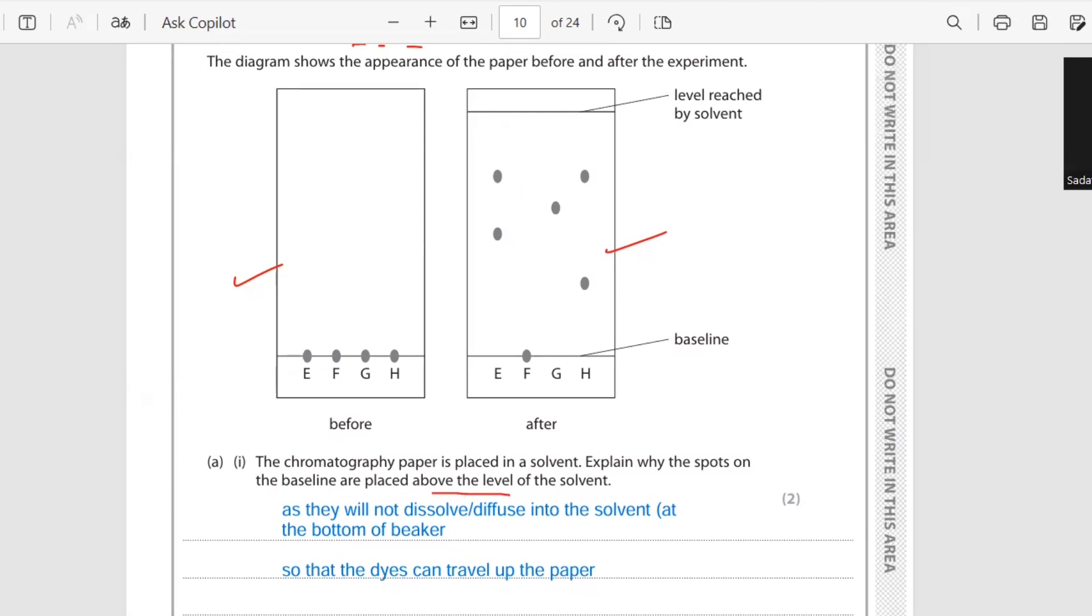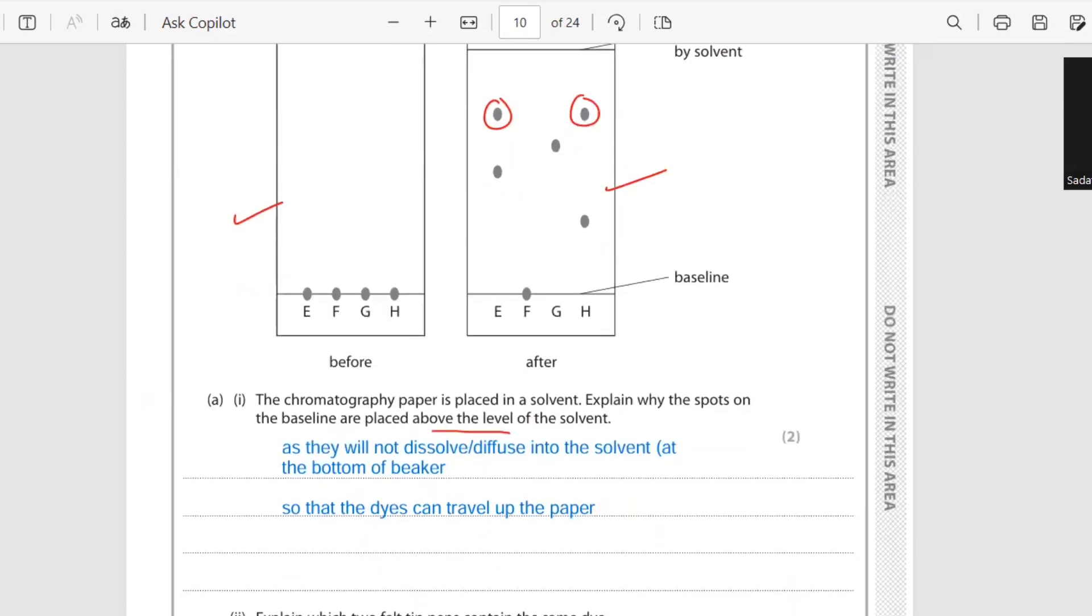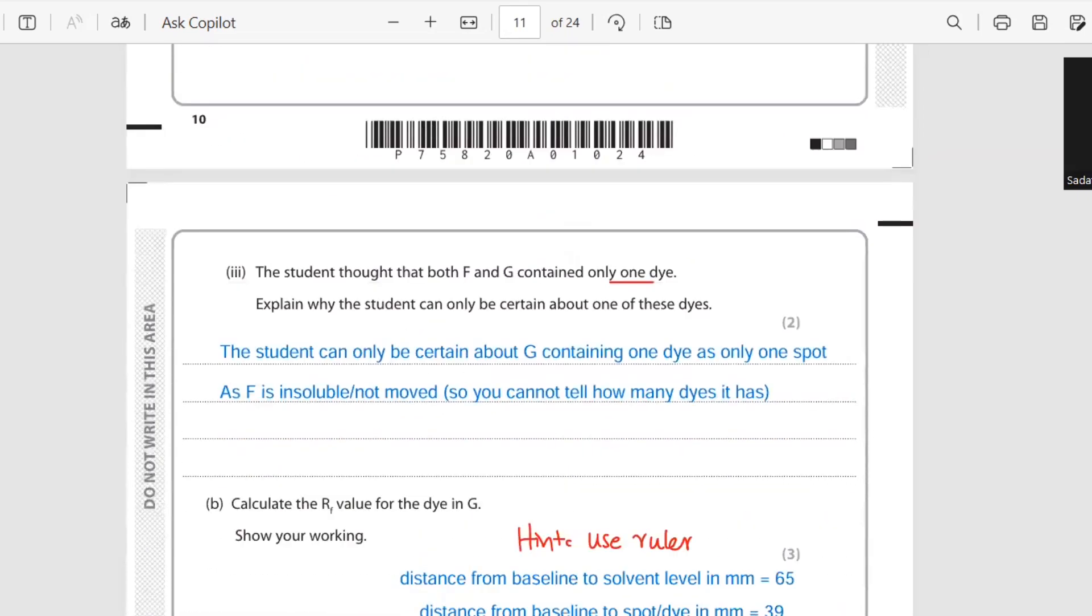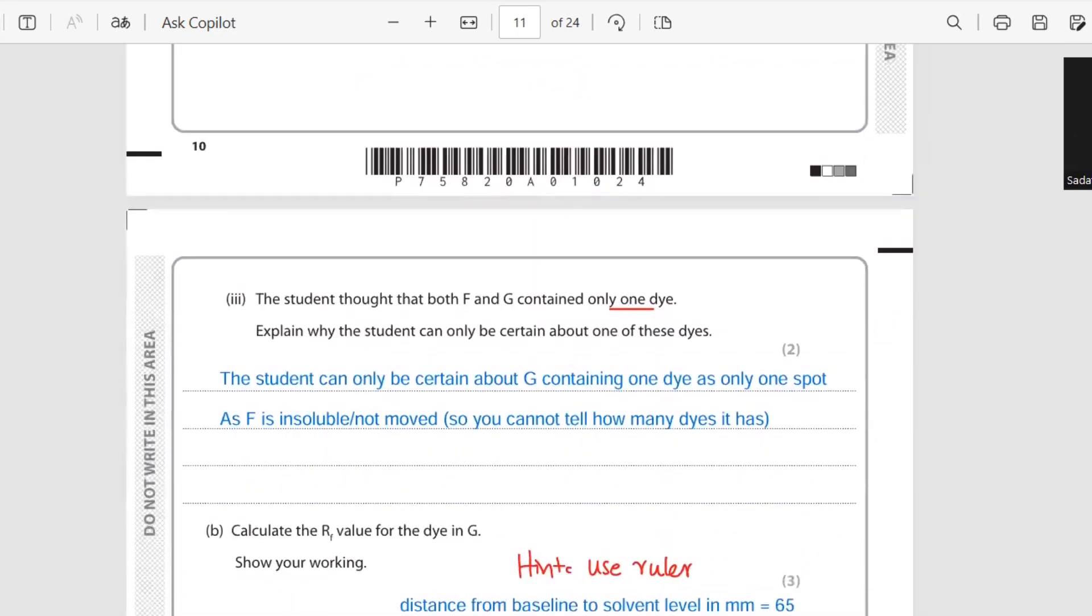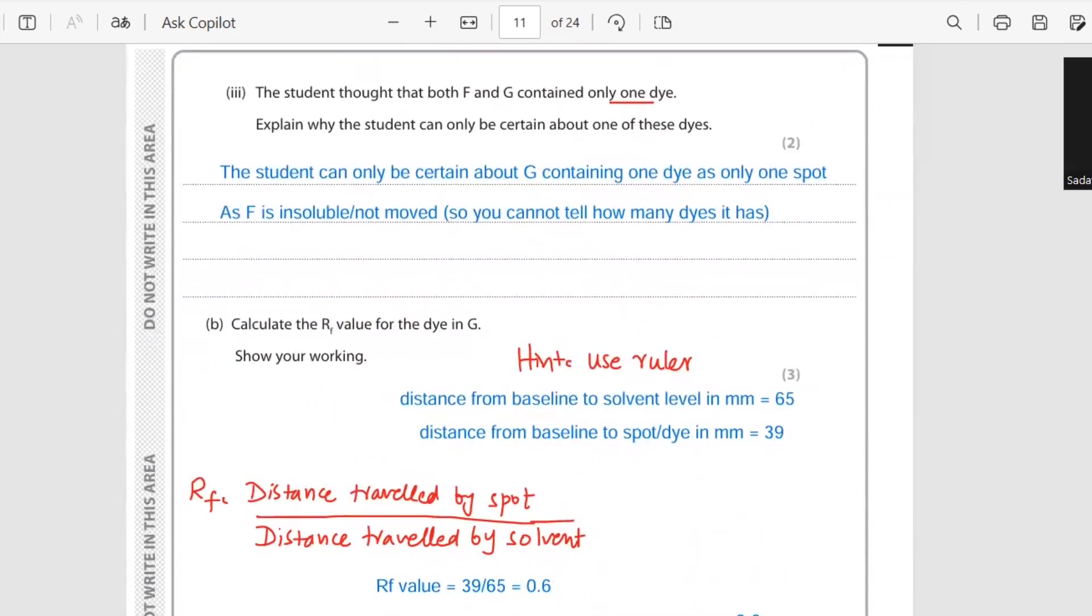Explain which two felt tip pens contain the same dye. You have to see the common spots found in all of these substances. So here we find the common spots here and here - it means E and H are having common spots. E and H both have spots at the same level. The student thought that both F and G contain only one dye. If we find them, G is containing only one dye, yes. And F, it did not even move any distance, so we cannot be sure about this because this means we have to change the solvent for this one - it is not soluble in the given solvent. The student can only be certain about G containing one dye as only one spot. F is insoluble or not moved up, so you cannot tell how many dyes it has.